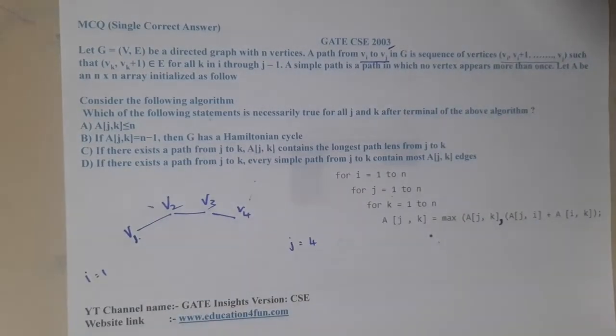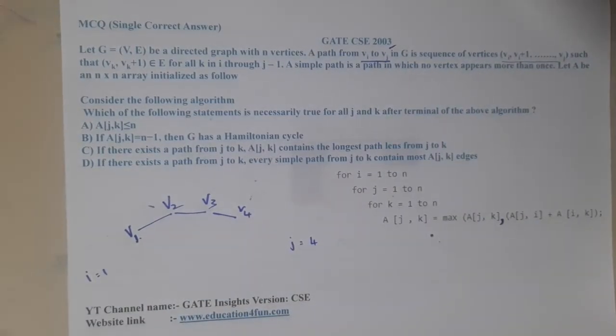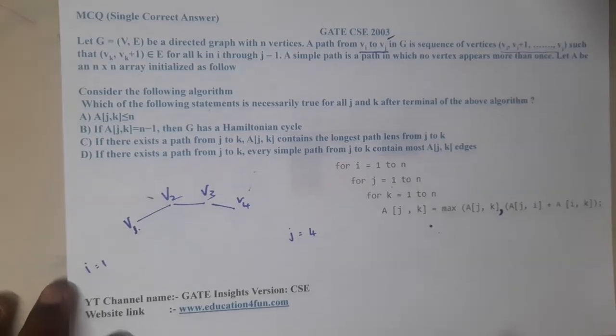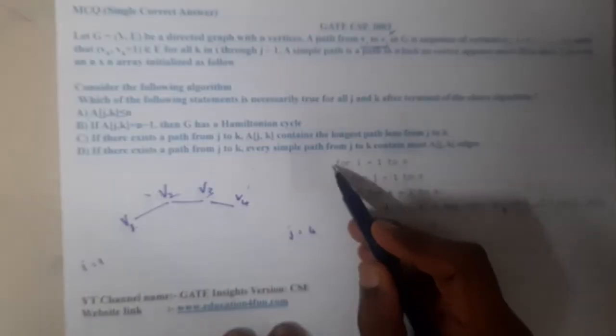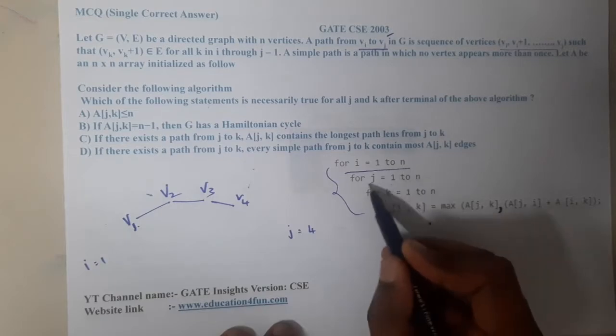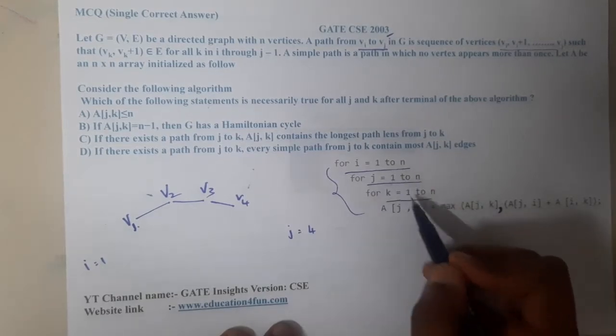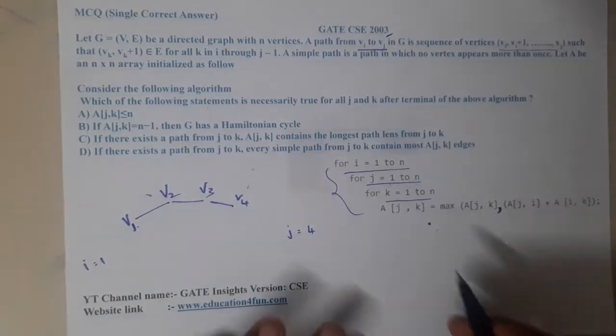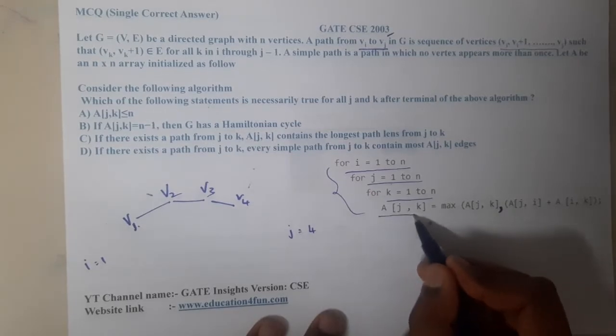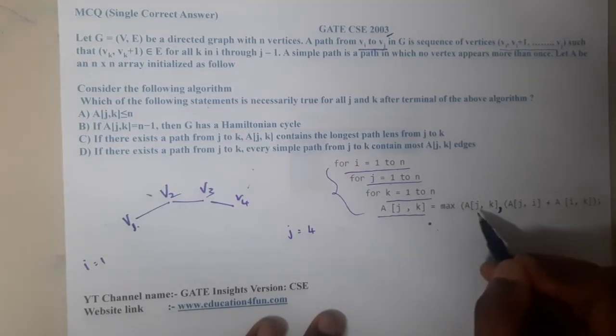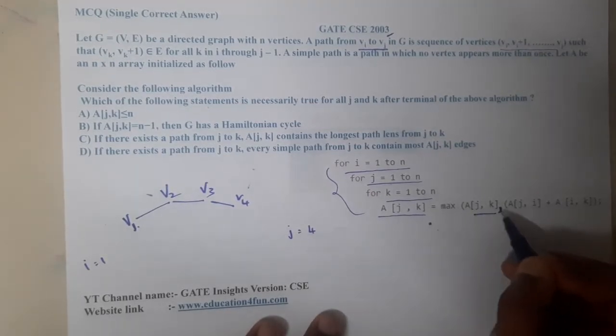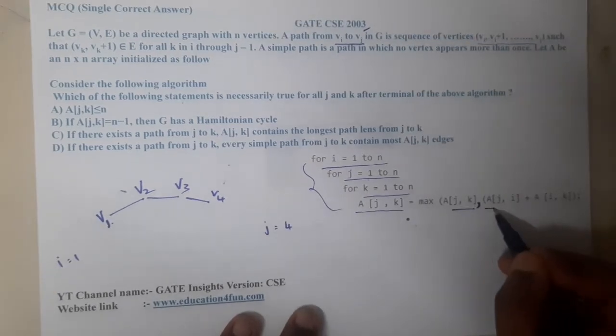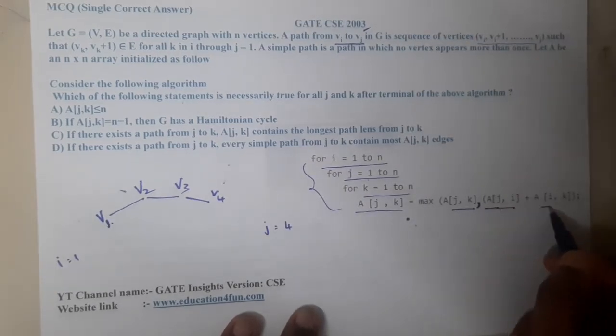Now we are having three loops here: i from 1 to n, j from 1 to n, and k from 1 to n. We are updating A[j,k] equals max of A[j,k] comma A[j,i] plus A[i,k].